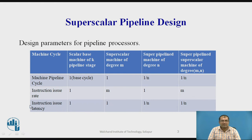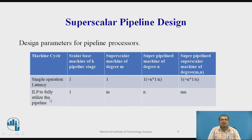Coming to instruction issue latency: it remains 1 in the first two cases, and 1/N in the superpipeline cases. For simple operation latency, it is 1 and 1 in the first two cases. In the superpipeline case it is 1, since 1 × (1/N) still effectively gives 1. And this is also 1 for the superpipeline superscalar.